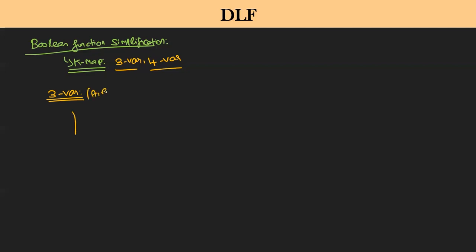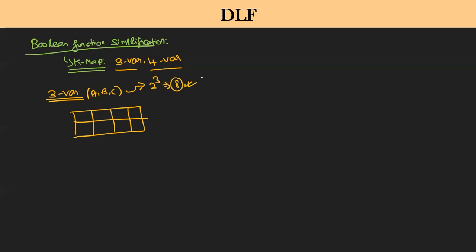Listen carefully. A 3-variable map means 3 variables will be available: A, B, C. When I am giving 3 variables, how many Boolean functions are possible? 2 to the power 3 is nothing but 8 Boolean functions possible. There are 8 Boolean functions possible.